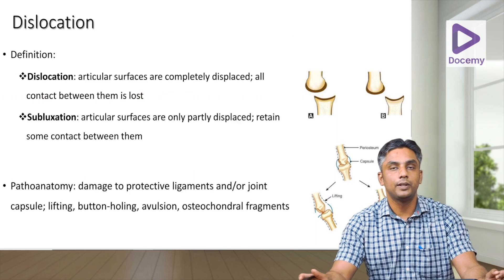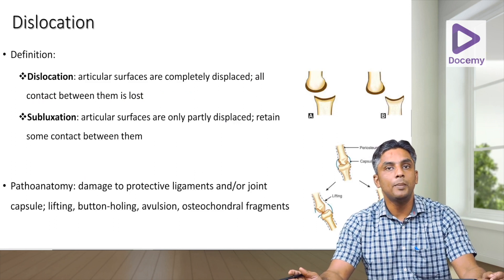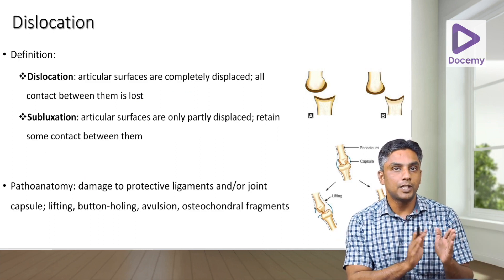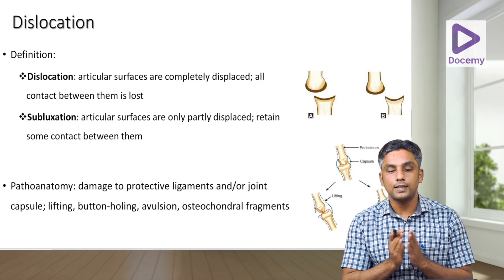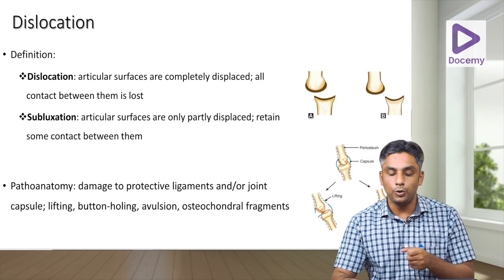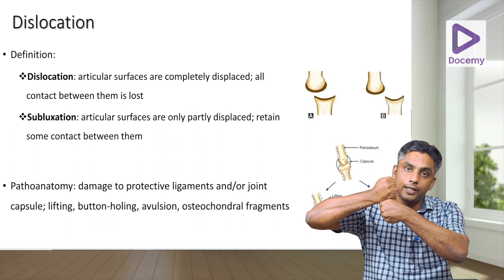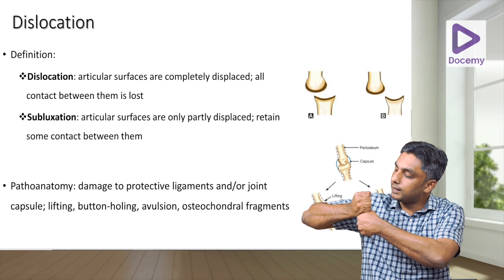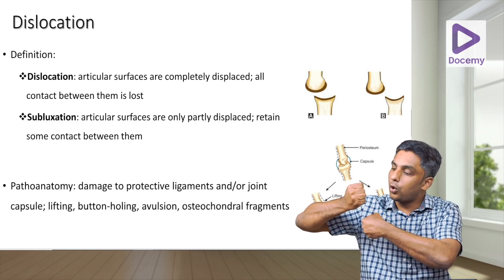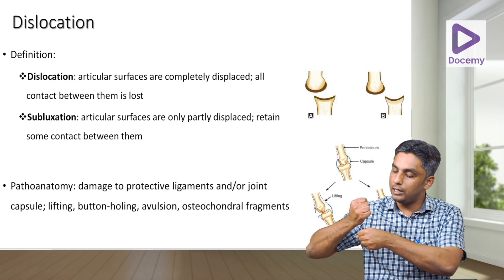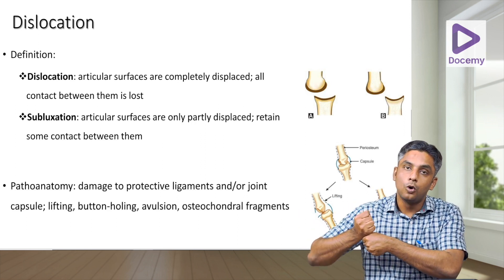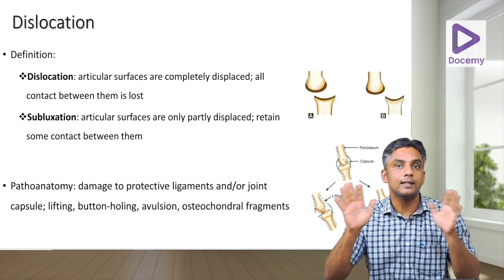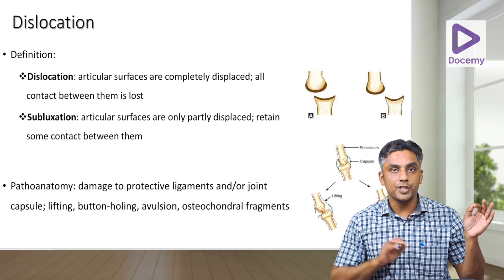Now, moving on to dislocation. Dislocation is when the articular surfaces are completely displaced and all contact between them is lost. If it is only partial displacement and some contact between articular surfaces is retained, that is subluxation. That is how you differentiate between a dislocation and a subluxation.